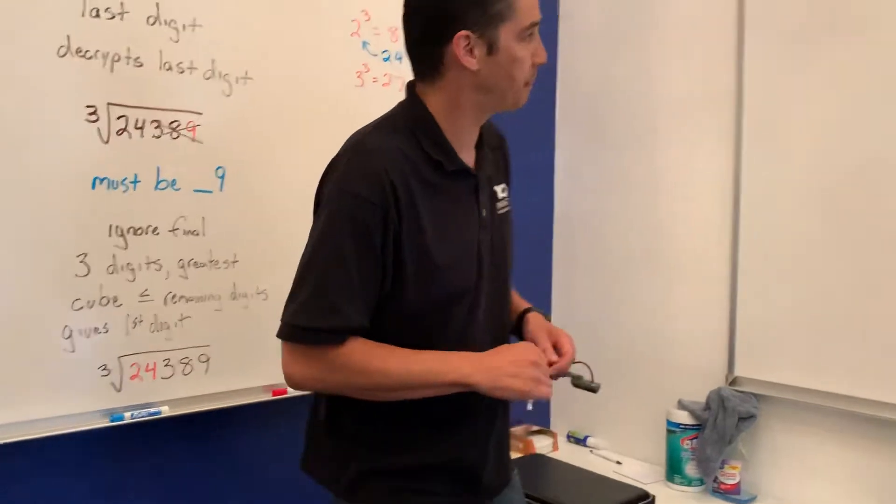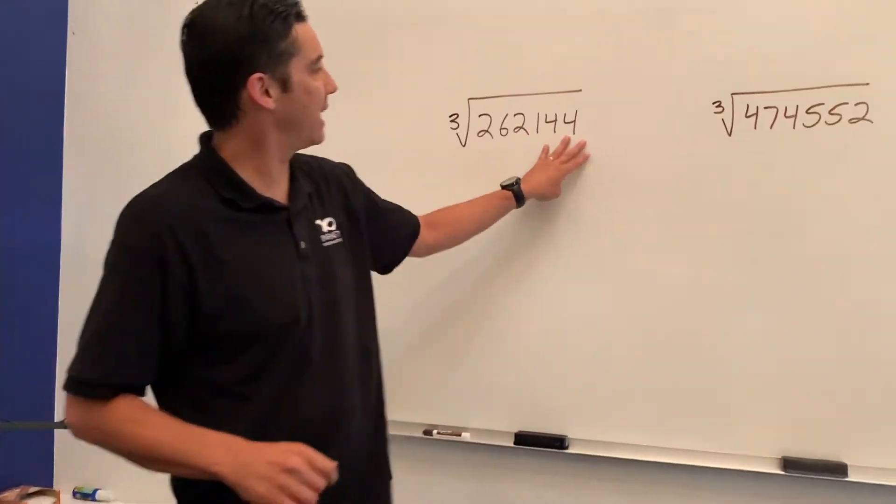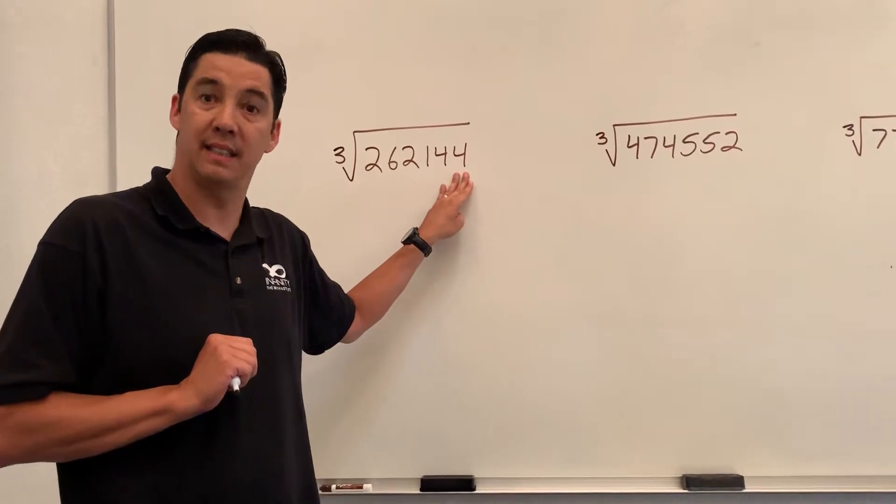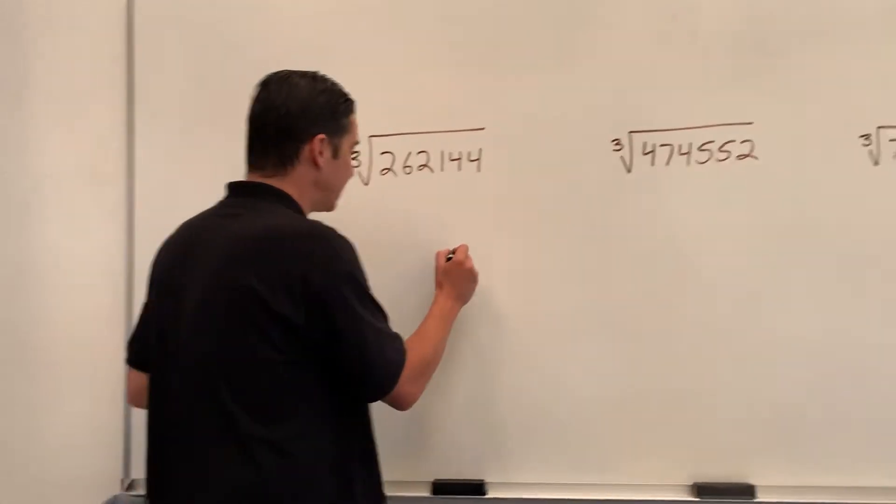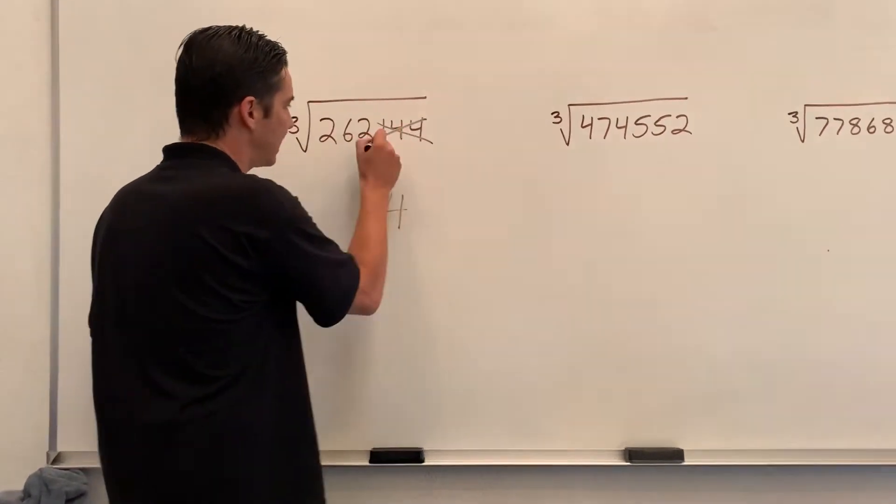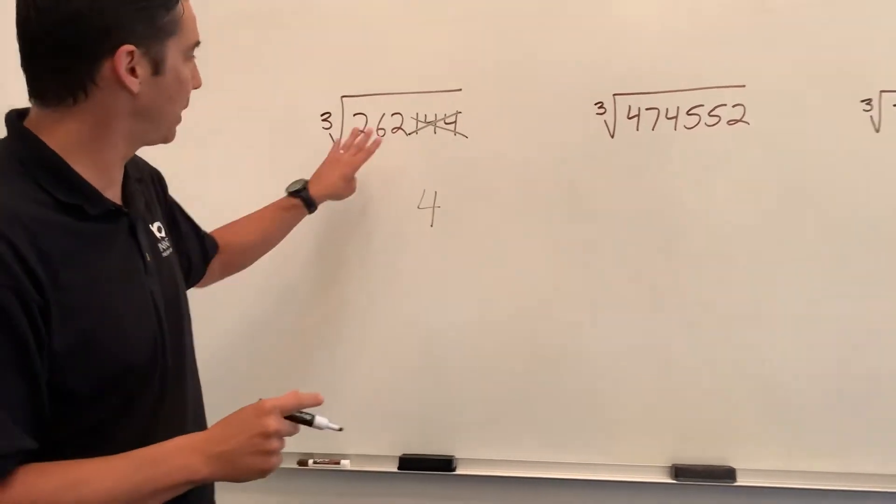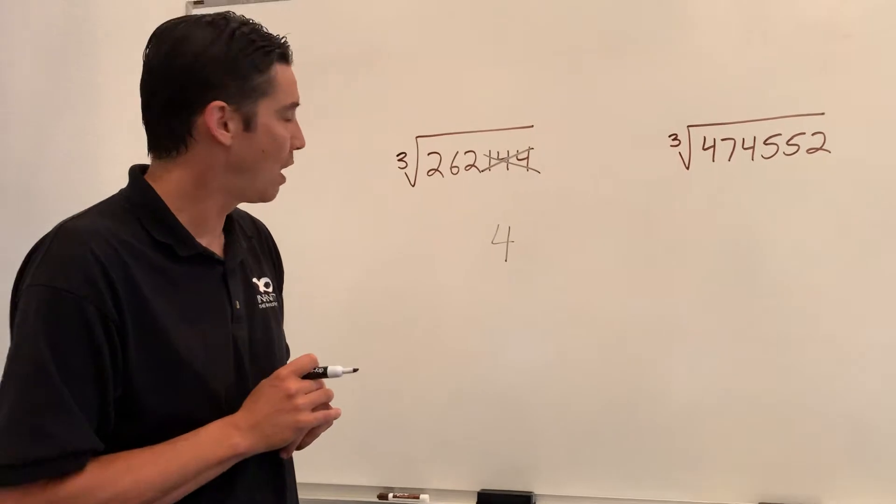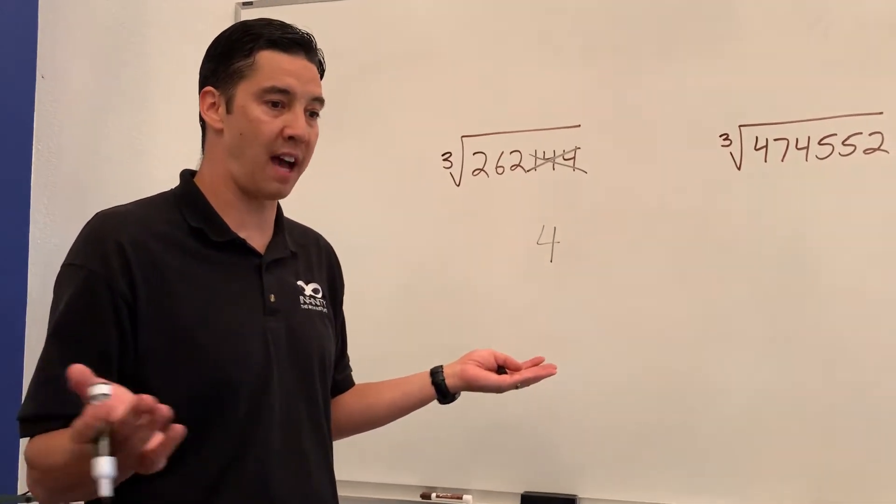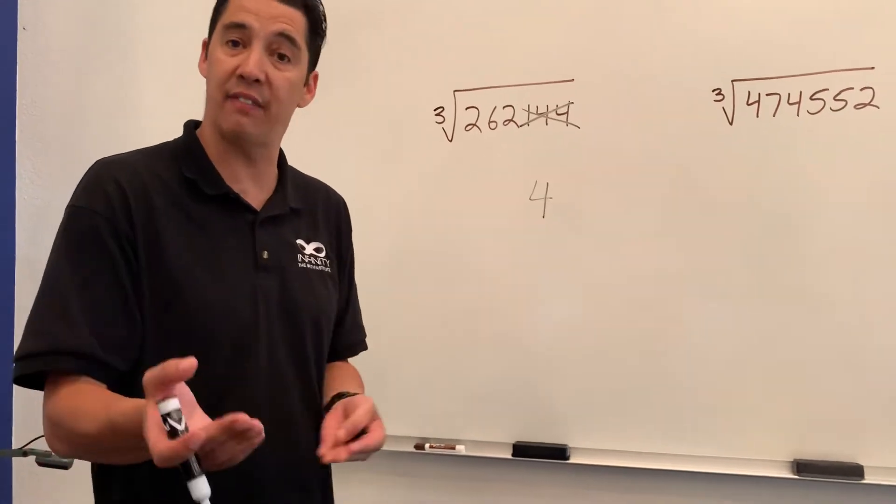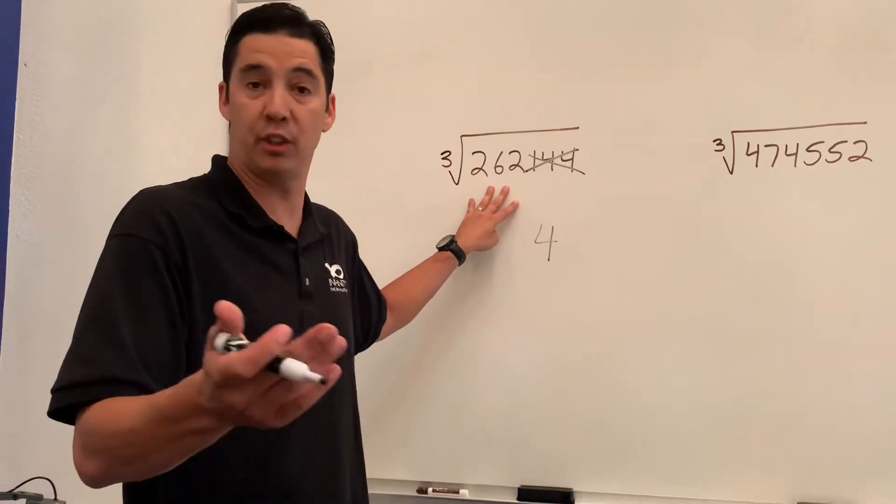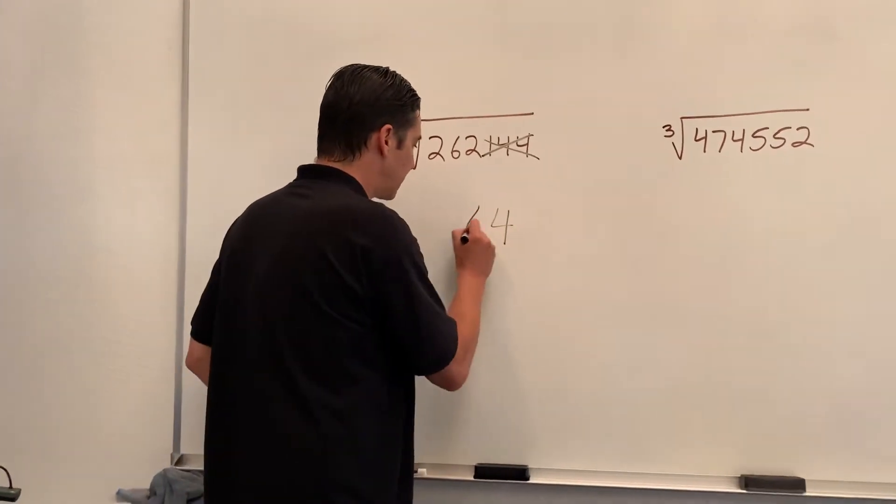Let's look at another example. The 4 right here. We know that 4 cubed is 64, so the last number must be 4. Then we get rid of these numbers and what is the greatest cube less than 262? Well 4 cubed is 64, 5 cubed is 125, and 6 cubed is 216. 7 cubed is 343. 6 cubed is 216, so the answer must be 64.